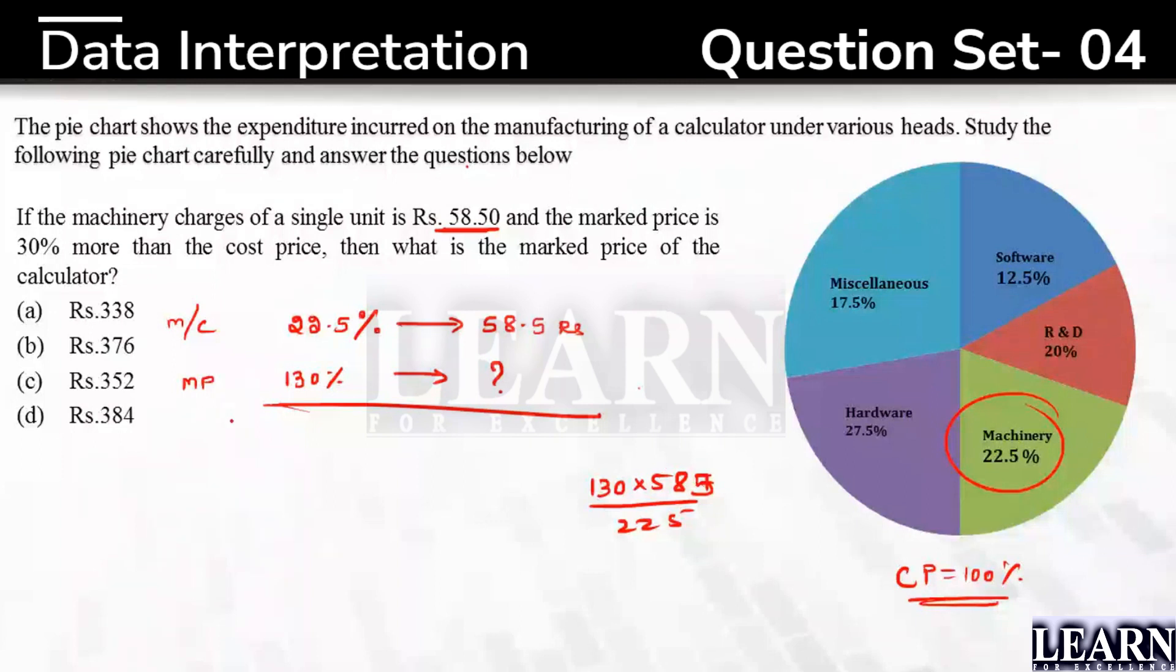Estimation will help us. Here we have got 22.5% is 58.5. I need 130%. So what I'll do is I'll try increasing the value. Double of 22.5 is going to be 45%. What is 45%? 45% is nothing but 58.5 double, which is 117.